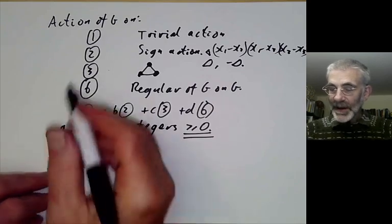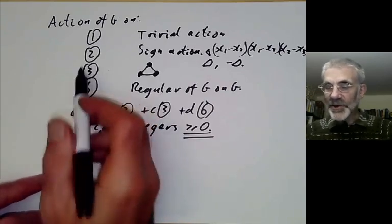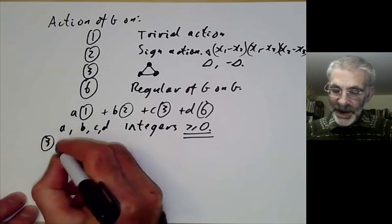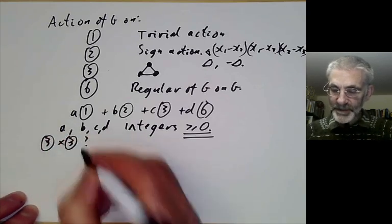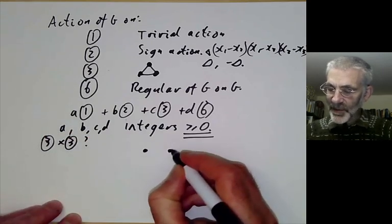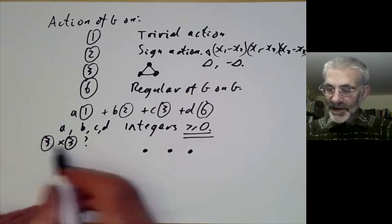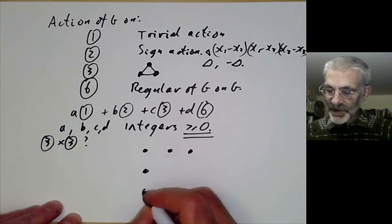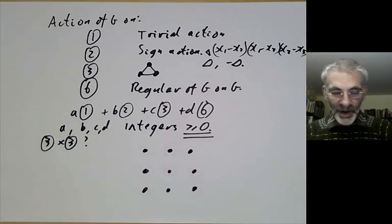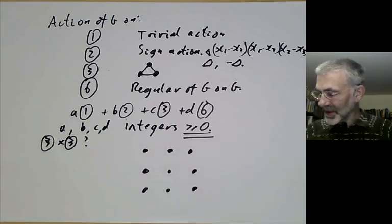For example, let's try working out what the multiplication in this ring is. What is three times three? You take a three-element set acted on by G, another three-element set acted on by G, take the product to get nine elements, and we need to know how G is acting on these nine elements.